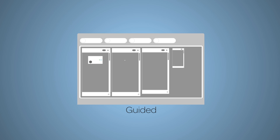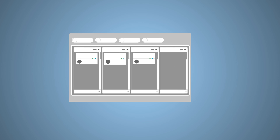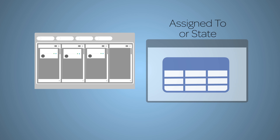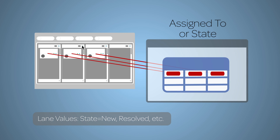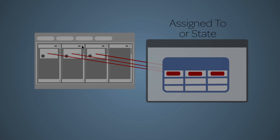You can also create a guided board from a column menu of a choice or reference field, such as assigned to or state. Lanes are determined by field values — for example, state equals new, resolved, etc. — and lane changes will update underlying task data.